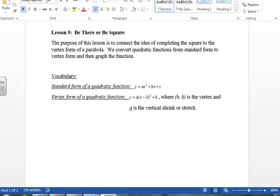We convert quadratic functions from standard form to vertex form and then graph the function. Some vocabulary that we need to be aware of: the standard form of a quadratic function is y equals ax squared plus bx plus c. The vertex form of a quadratic function is y equals a times the quantity x minus h squared plus k, where hk is the vertex of the parabola and a is the vertical shrink or stretch.